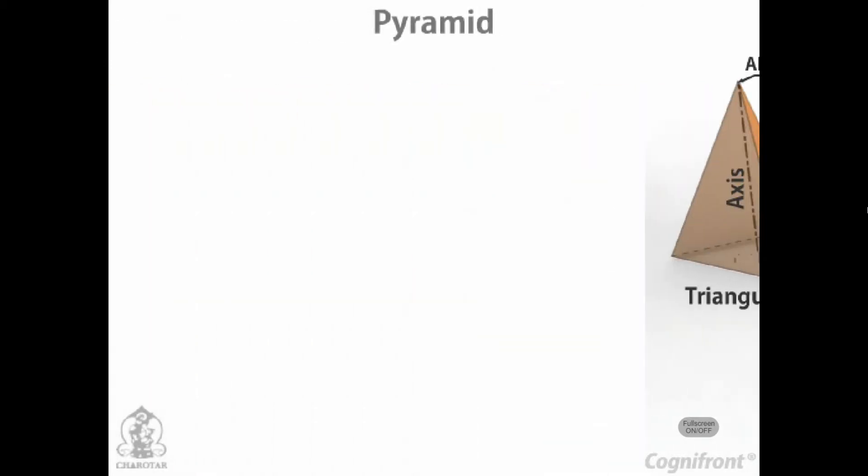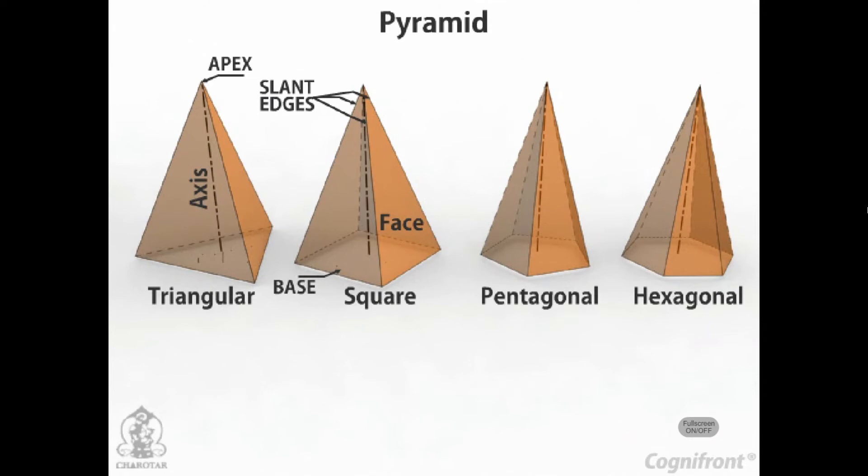Pyramid: This is a polyhedron having a plane figure as a base and a number of triangular faces meeting at a point called the vertex or apex. The imaginary line joining the apex with the center of the base is its axis. A right regular pyramid has its axis perpendicular to the base, which is a regular plane figure.